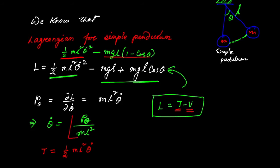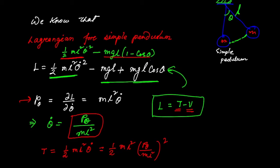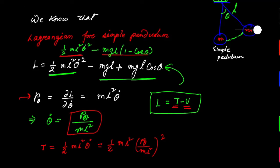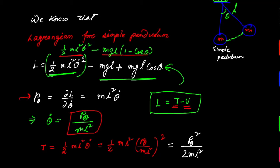We have already obtained that θ̇ = p_θ / ml² from the previous equation. So if you substitute here, then the kinetic energy term becomes T = (1/2)ml² × (p_θ / ml²)², which equals p_θ² / 2ml².